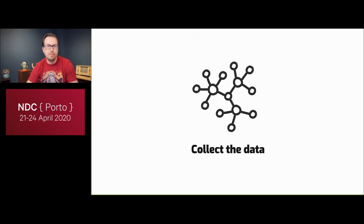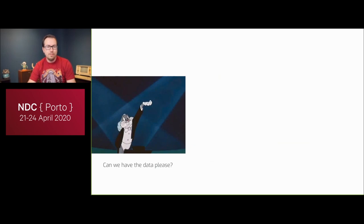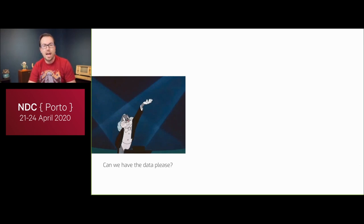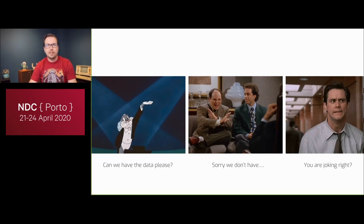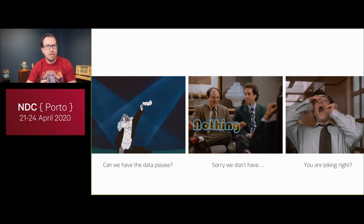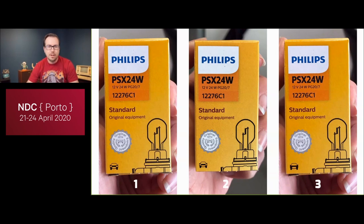To build this solution, we needed data. In negotiations with the company, we asked if they had data, and they said yes. So we signed the contract and started. When we asked for 10,000 to 100,000 pictures of genuine products and fake products, they told us they didn't have anything at the moment. That left us asking: how do we solve a machine learning problem with no data?